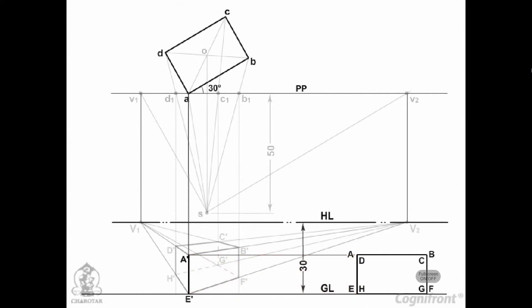Draw lines joining A' and E' with V1 and V2. Through B1, draw a vertical line to intersect A'V2 at B' and E'V2 at F'. Similarly, draw a vertical through D1 and obtain points D' and H'.